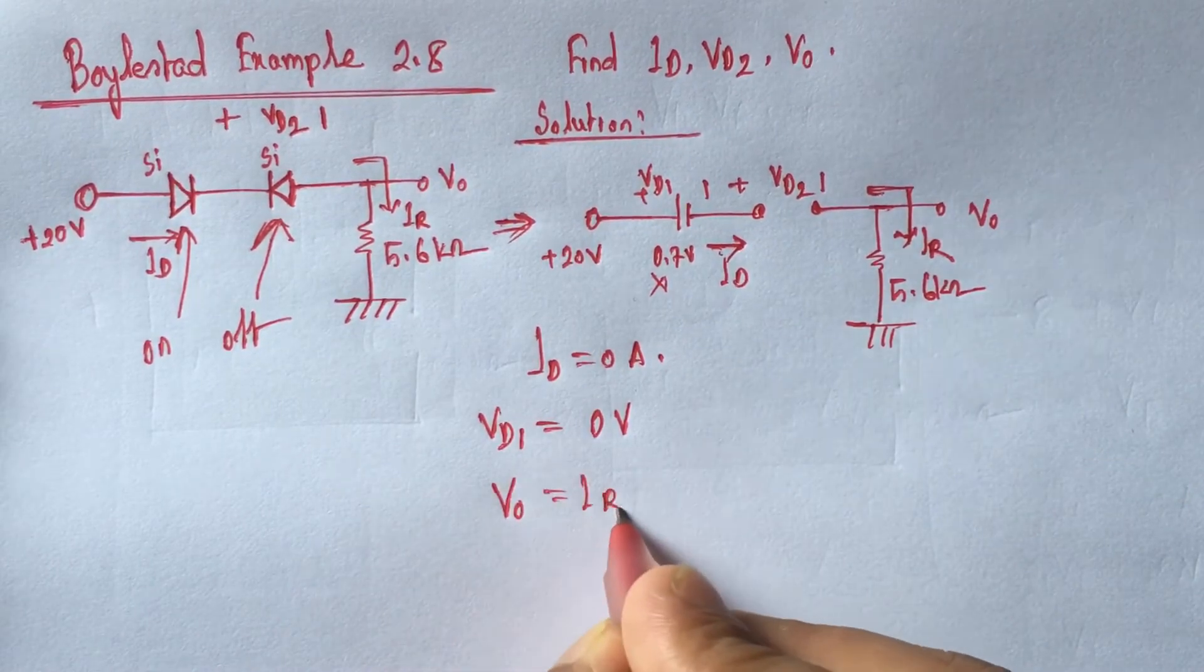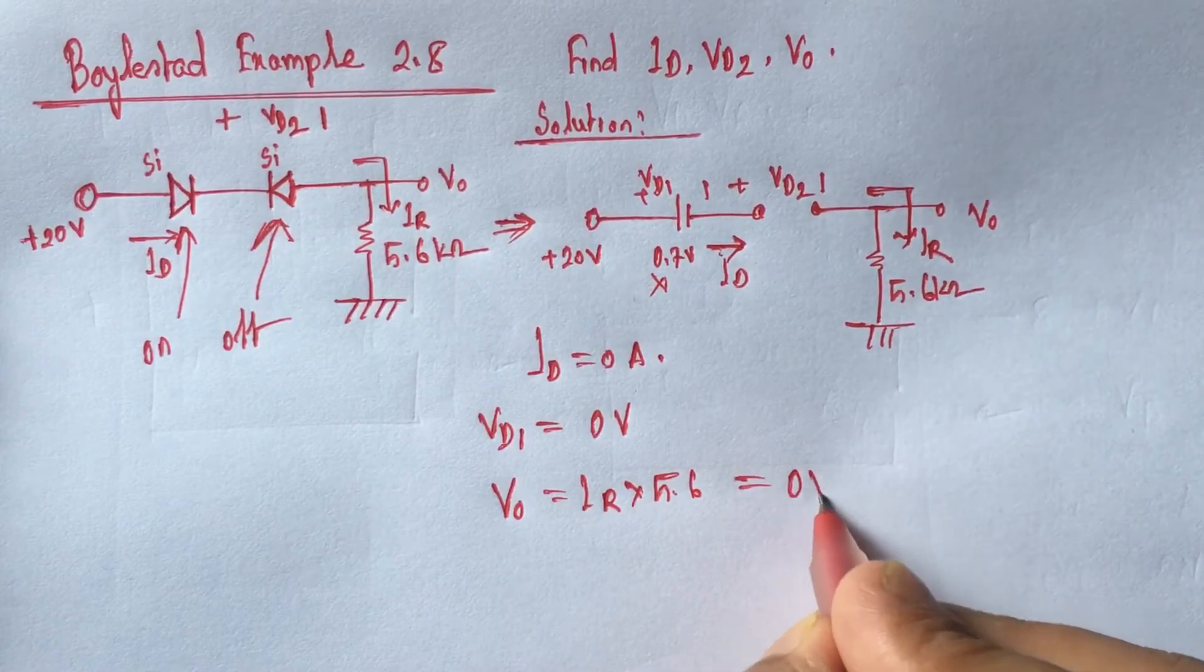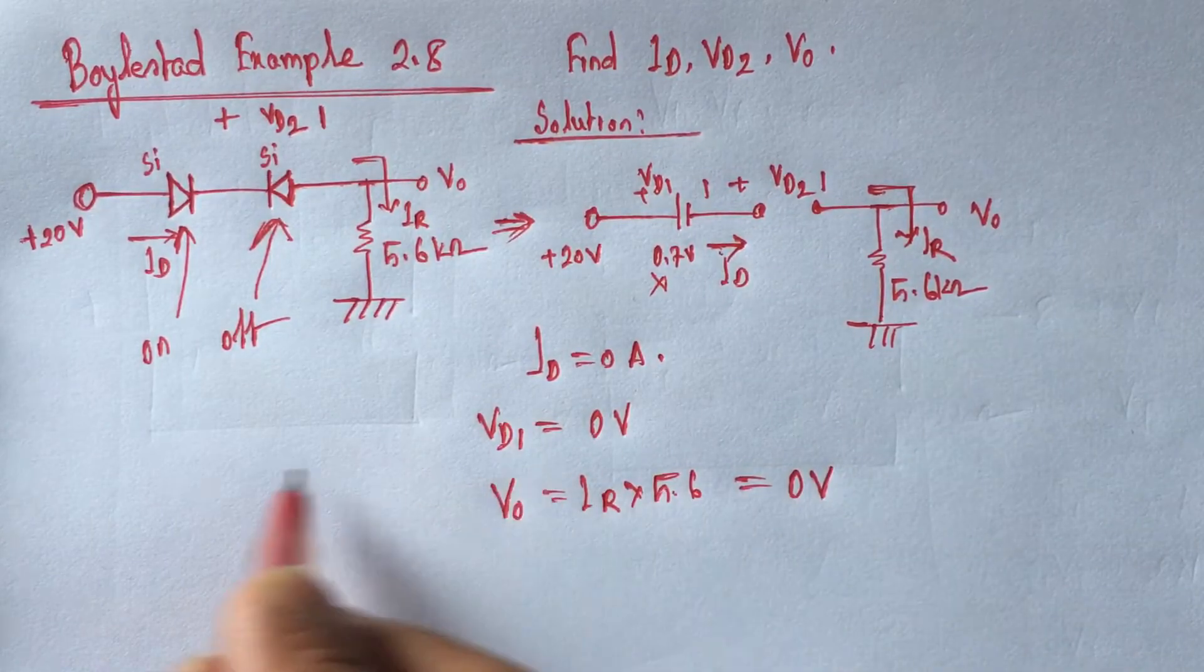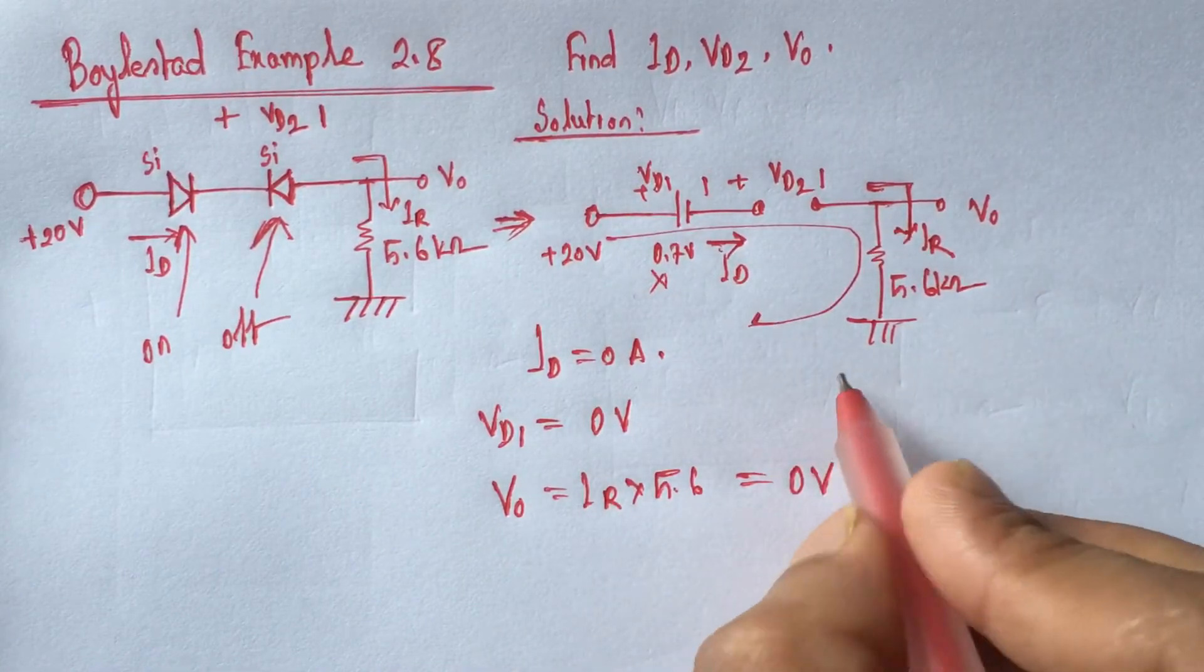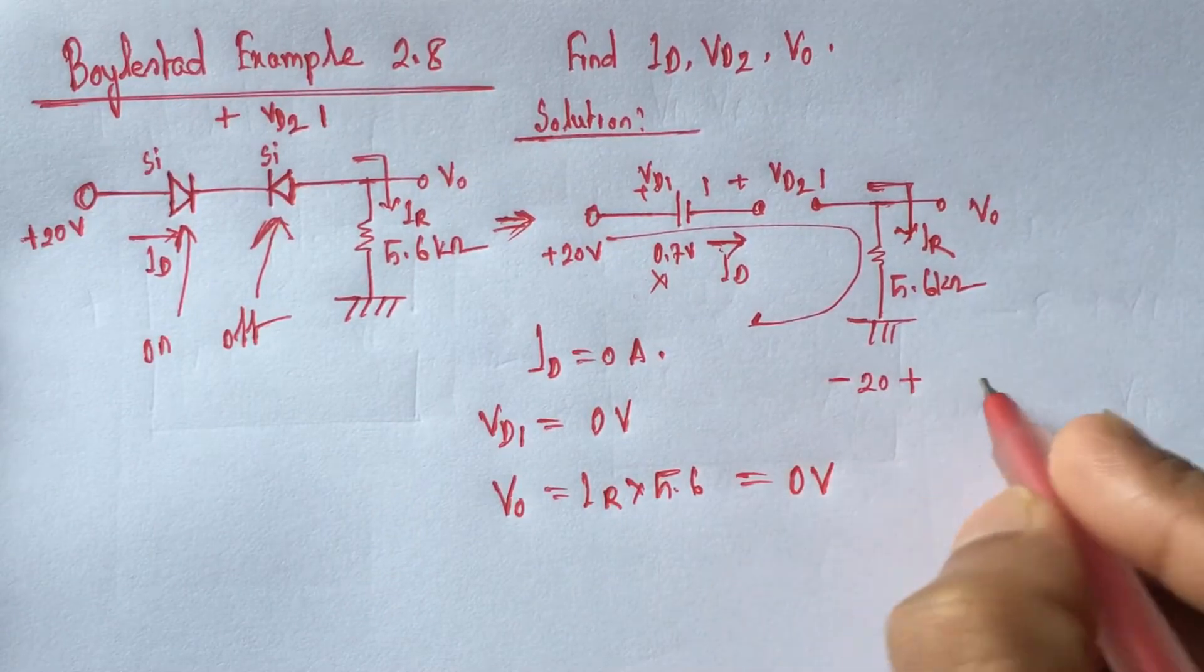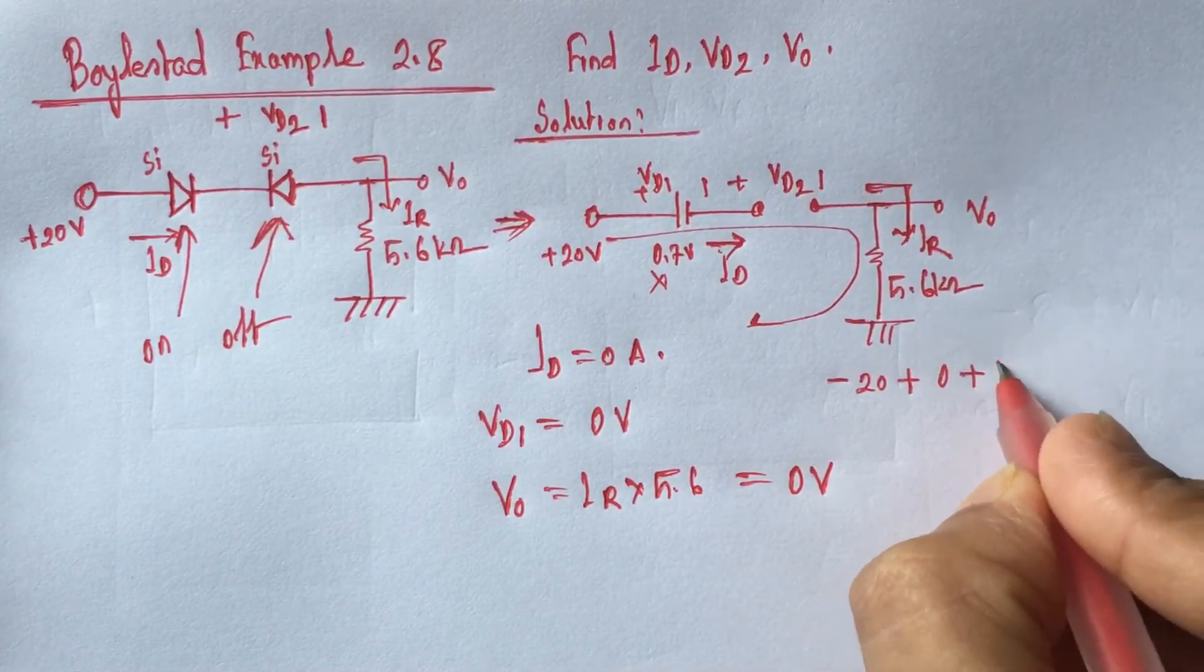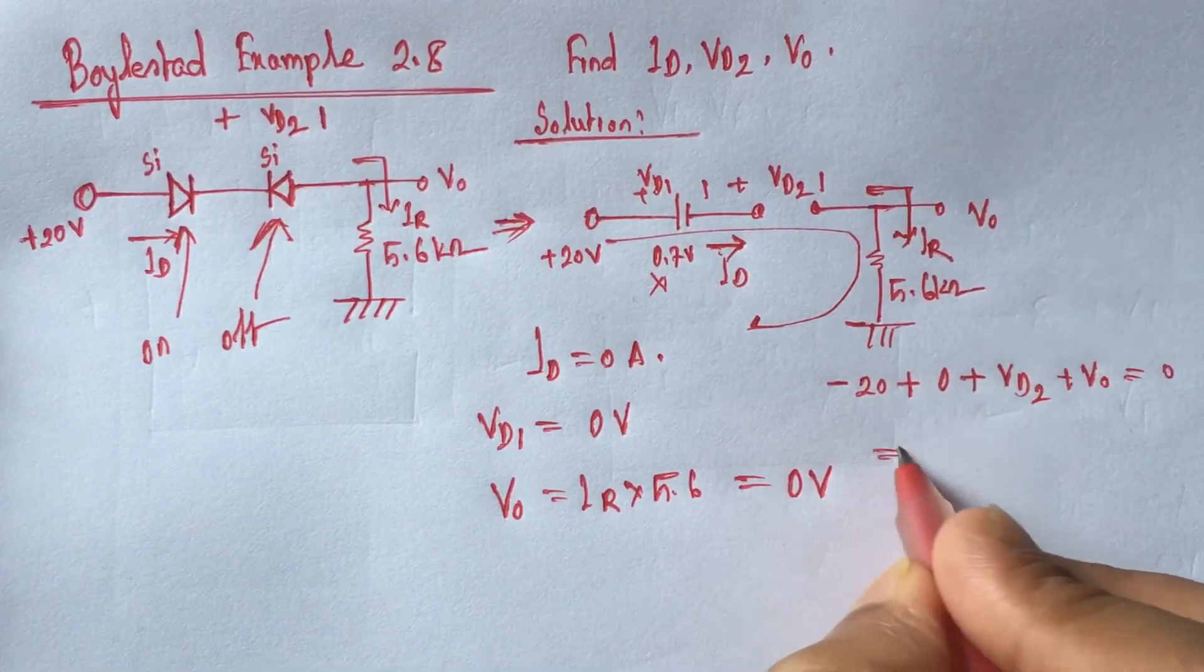0 is equal IR into 5.6, this is also 0 volt. Now if we apply Kirchhoff's voltage law in this path we will get minus 20 plus 0 plus VD2 plus V0 is equal 0, that is